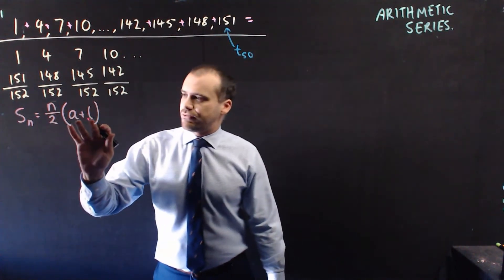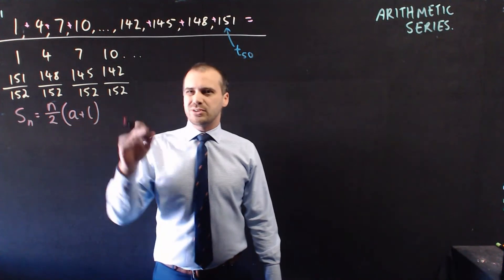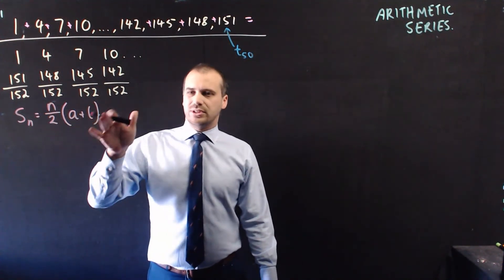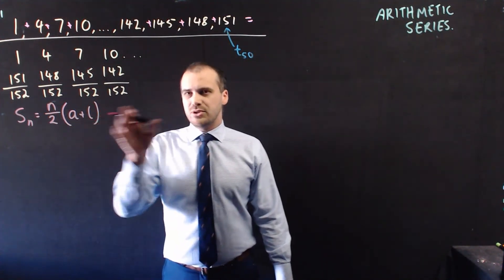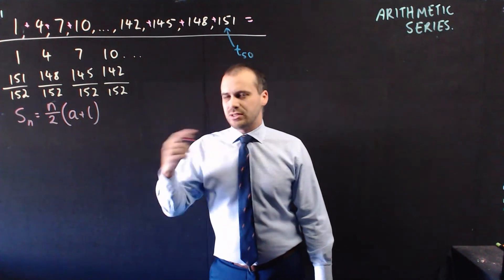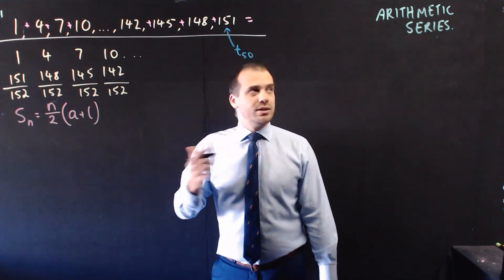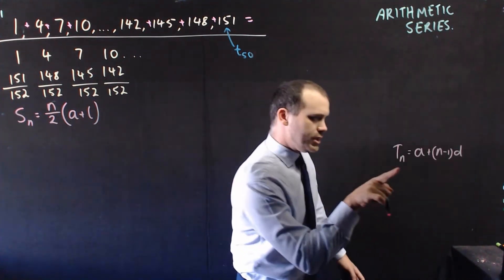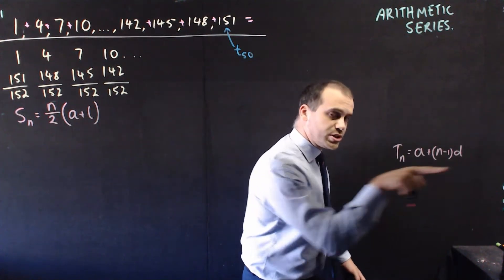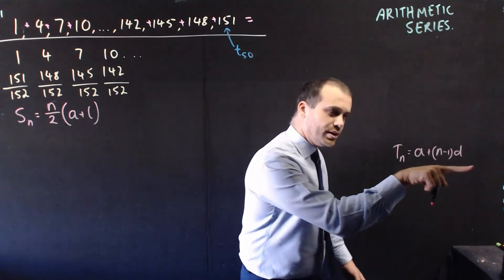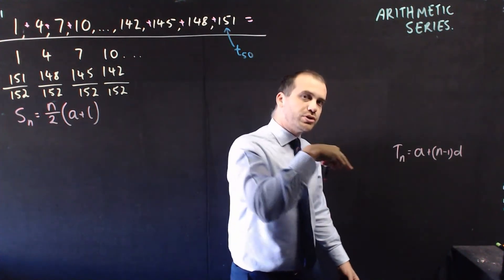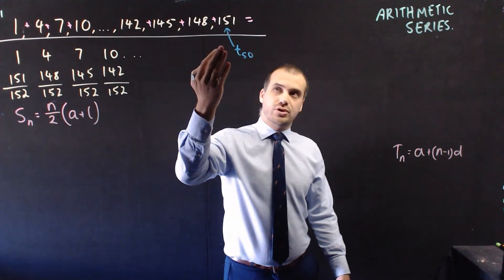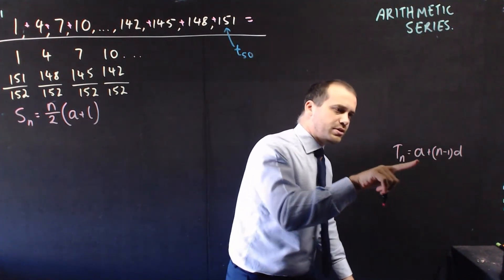Now there is a different form of this formula because sometimes you don't know what the last number is, but you can find it using the arithmetic sequence formula. So here is our arithmetic sequence formula. And if you want to know the last number — say the 50th term — you just sub 50 in here, the first digit here, and the common difference here, and that will give you the last term.